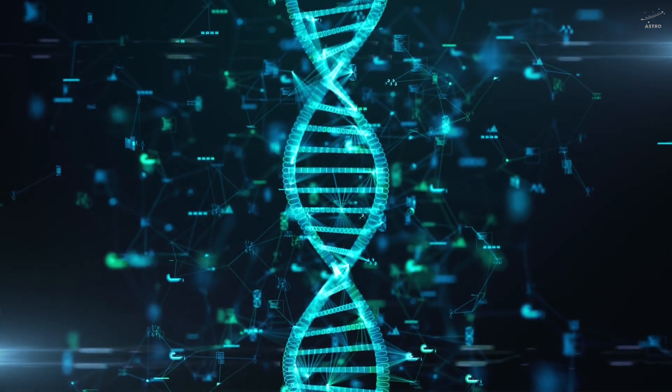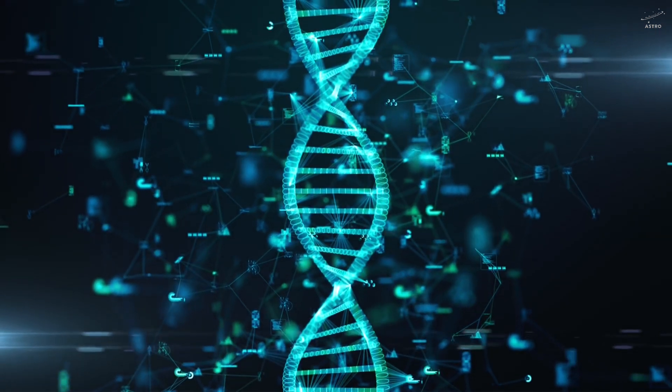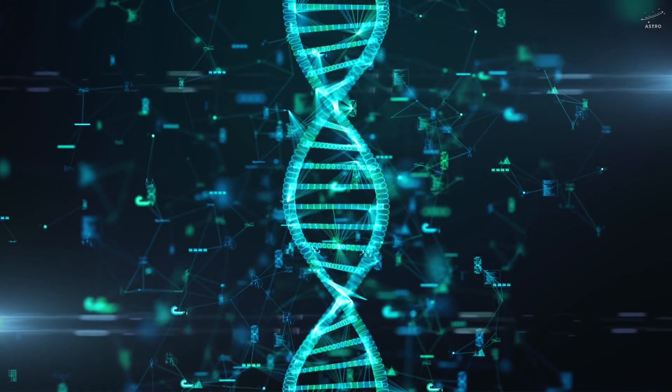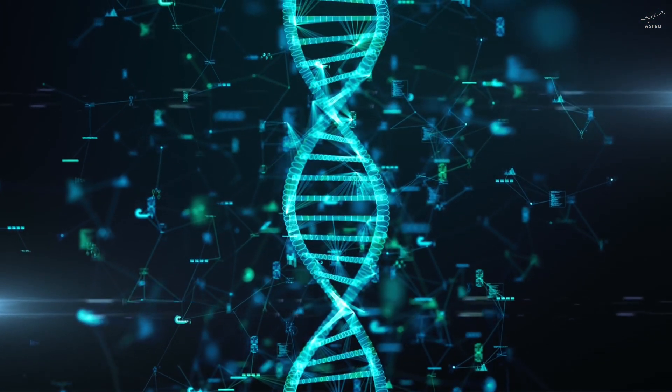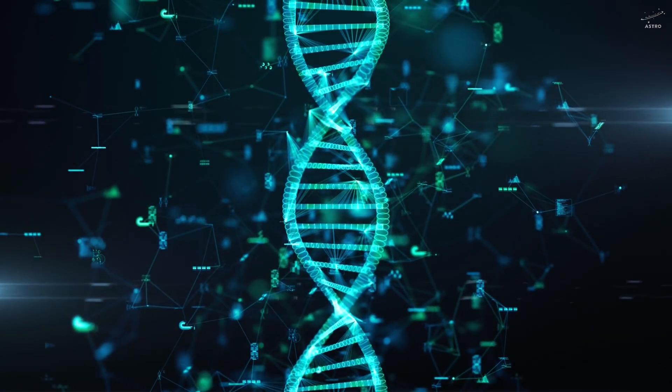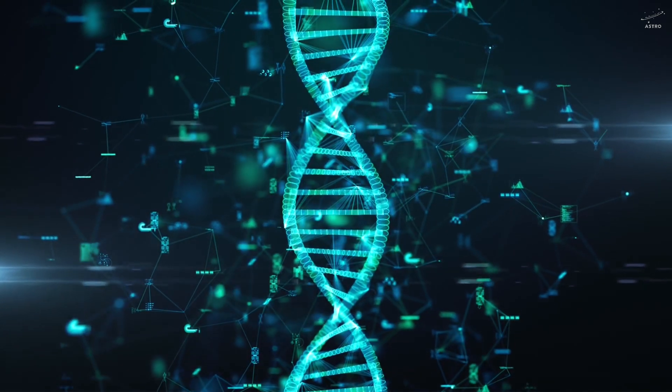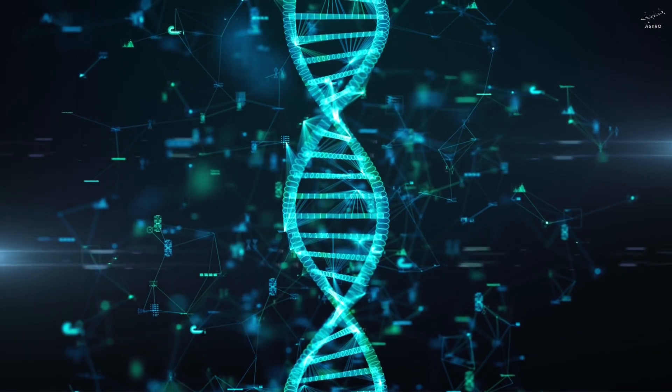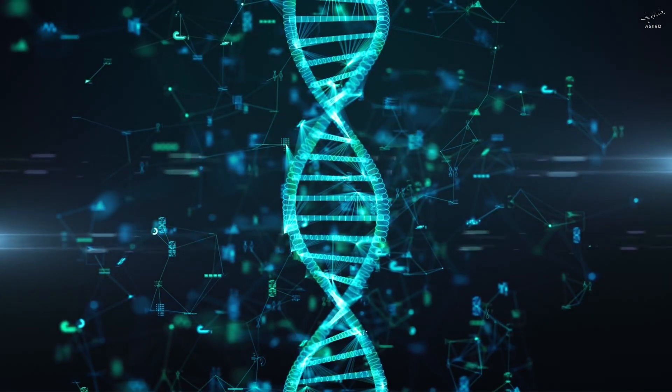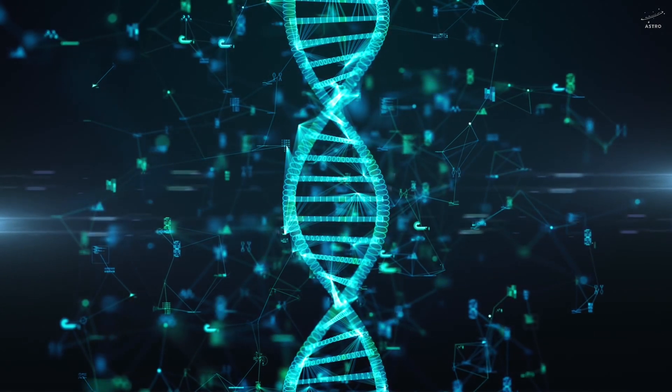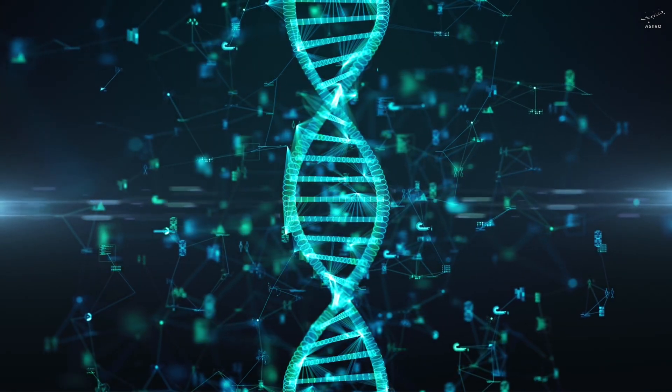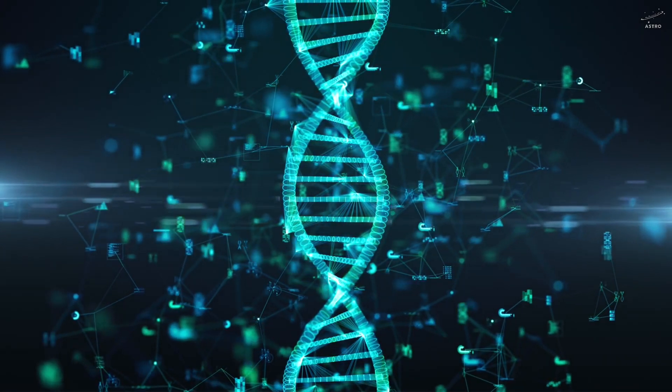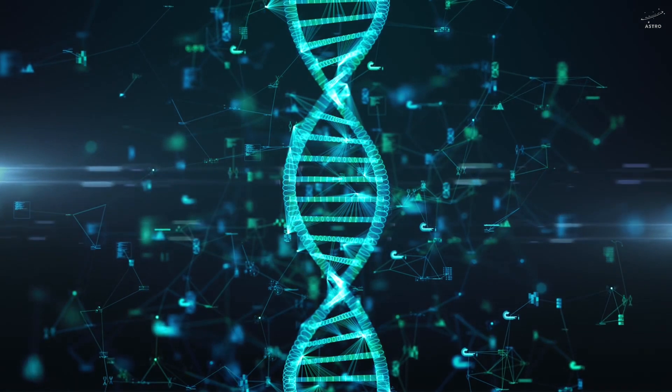In 2016, researchers at the University of Tokyo tested this. They inserted the DSUP gene into human kidney cells, then exposed them to x-rays. The result? DNA damage dropped by nearly 40%. No sci-fi, no miracle. Just evolution perfected over millions of years.